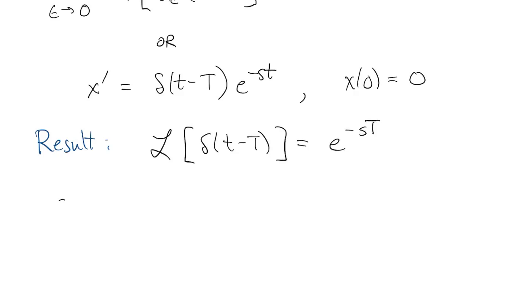An important special case here is when capital T is equal to zero, so an impulse right away, and its transform is the constant function one.